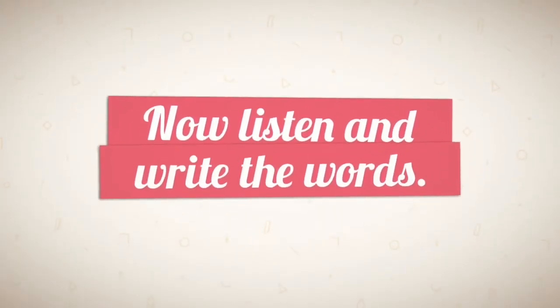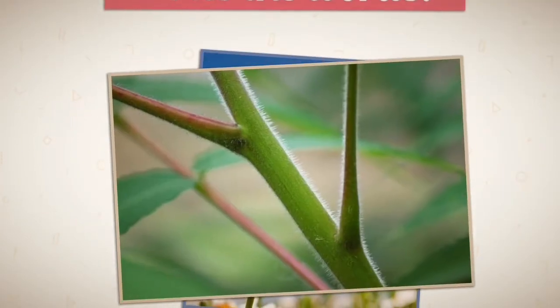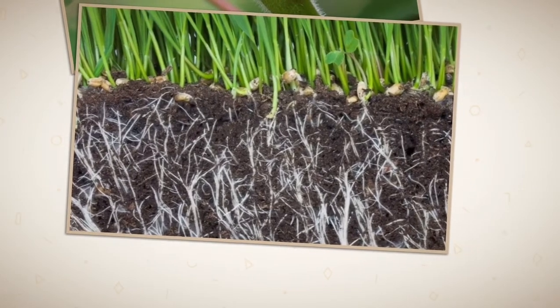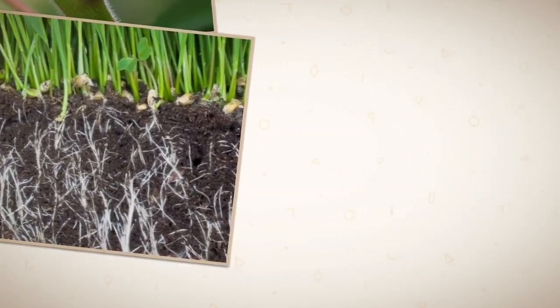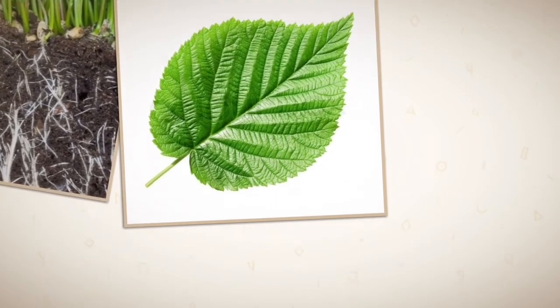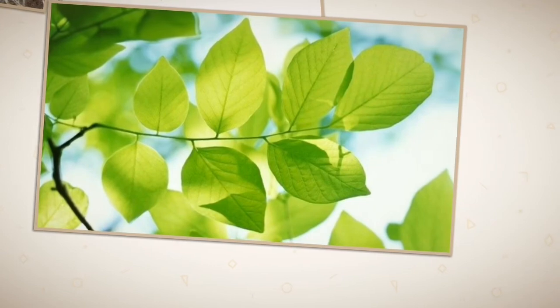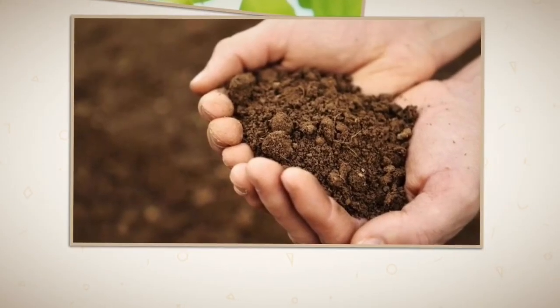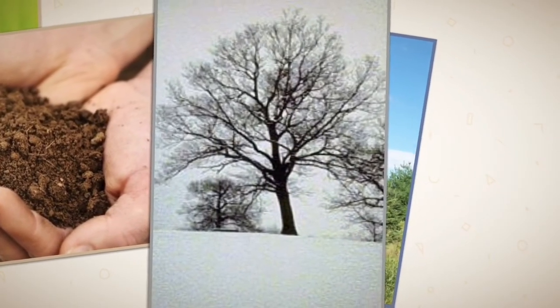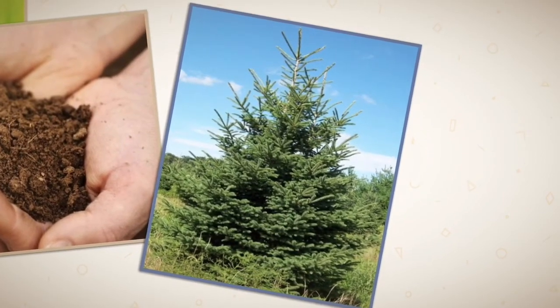Now listen and write the words. Flower. Stem. Roots. Leaf. Leaves. Soil. Deciduous tree. Evergreen tree.